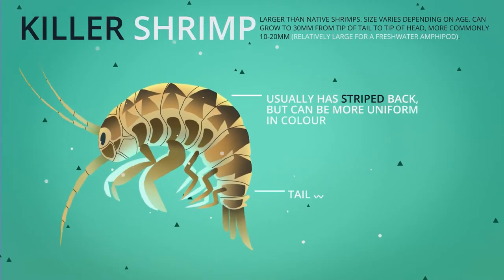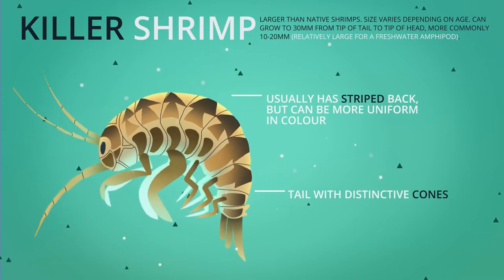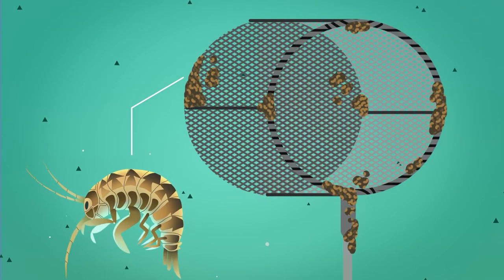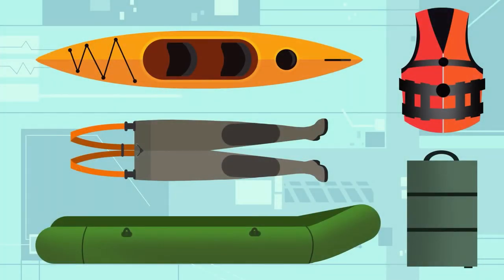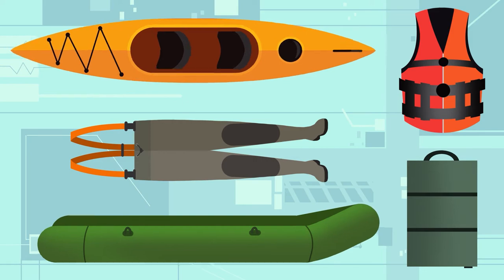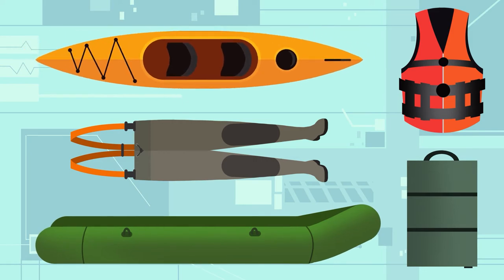The killer shrimp have three key identifying features, and are capable of surviving in damp conditions such as ballast water, angling gear, boats, kayaks and trailers for up to 16 days.